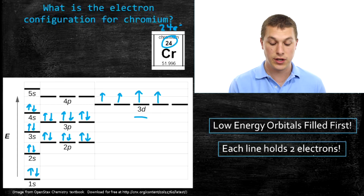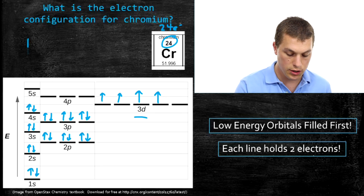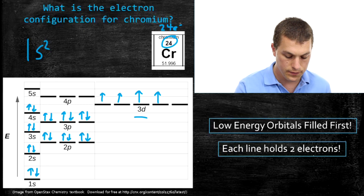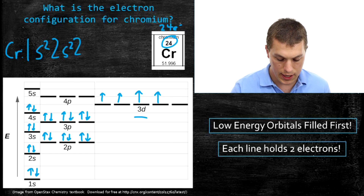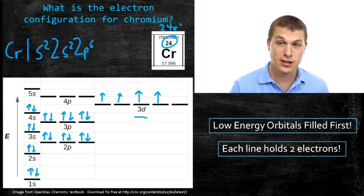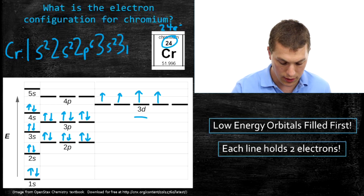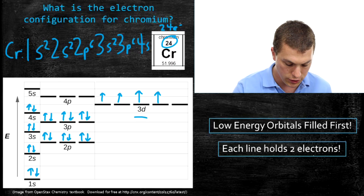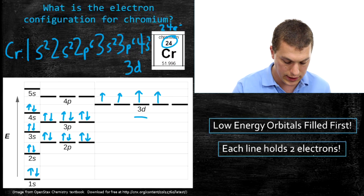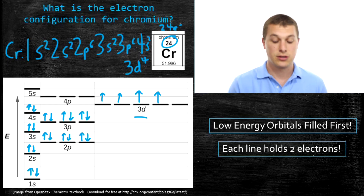That is the filled orbital diagram for chromium. Now we can write the electron configuration. We put 2 electrons in the 1s, 2 in the 2s, 6 in the 2p, 2 in the 3s, 6 in the 3p — you can start to see a pattern. Then 2 electrons in the 4s, and finally 4 electrons in the 3d. So the electron configuration for chromium is 1s², 2s², 2p⁶, 3s², 3p⁶, 4s², 3d⁴.